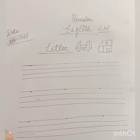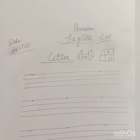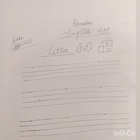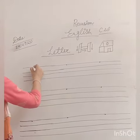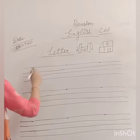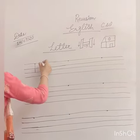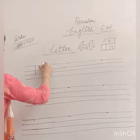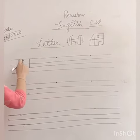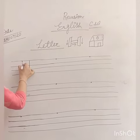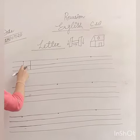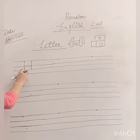Now I am going to show you how to write letter H. So kids, let's start to make letter H. Start from the top and make a standing line to the third line like this. Again we will make another standing line to the third line like this. Then we will go to the middle and make a sleeping line like this. Now we have done letter H.